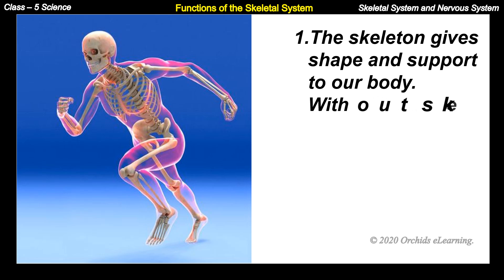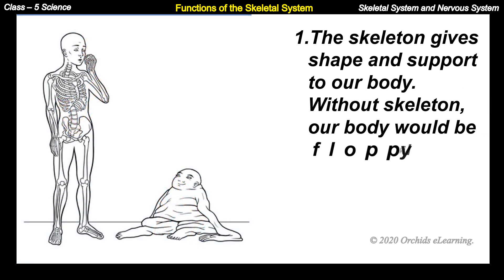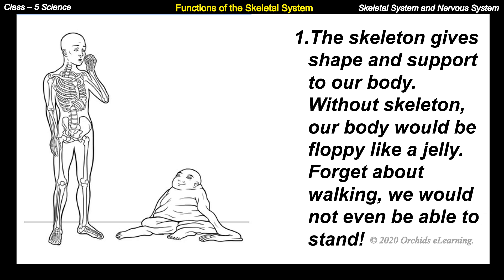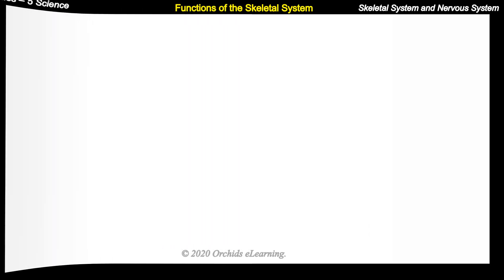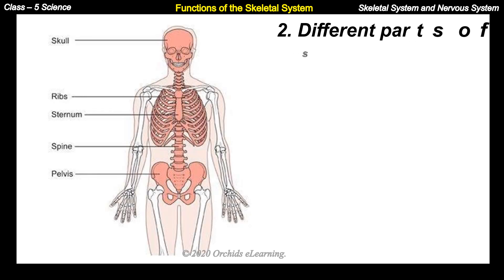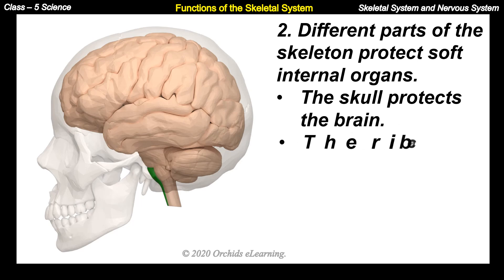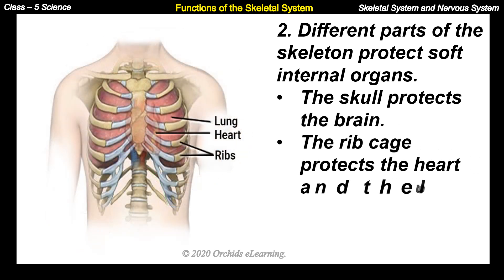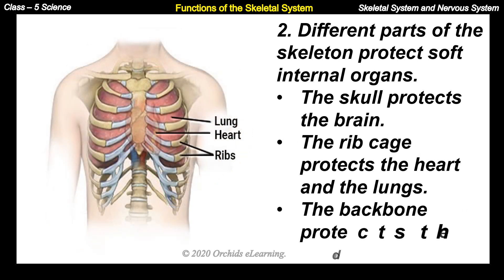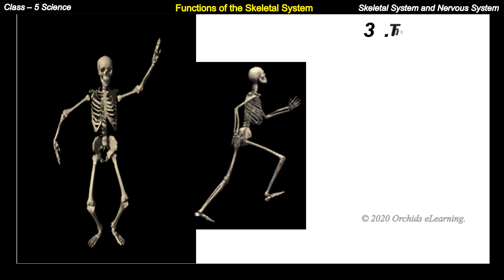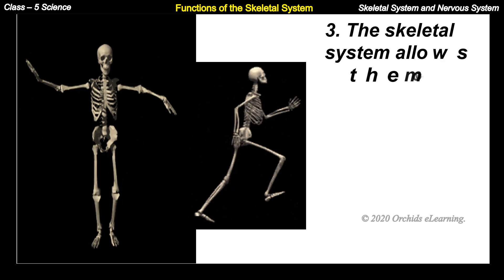Functions of the skeletal system: the skeleton gives shape and support to our body. Without a skeleton, our body would be floppy like jelly — we would not even be able to stand. Different parts of the skeleton protect our internal organs: the skull protects the brain, the rib cage protects the heart and lungs, the backbone protects the delicate spinal cord. The skeletal system also allows movement of different body parts.